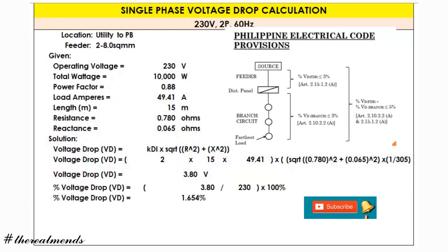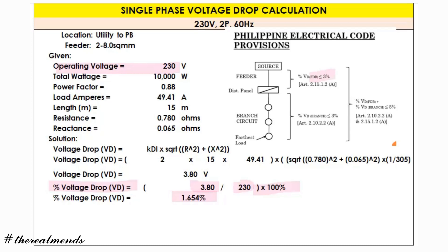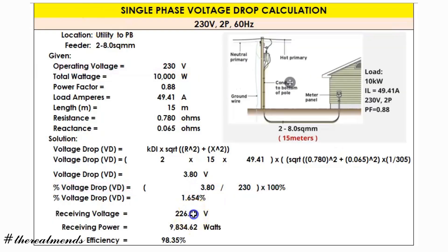To express the voltage drop in percent, divide 3.80 volts by the operating voltage of 230 volts, then multiply by 100. The answer is 1.654 percent. Based on PEC provisions, this should be less than or equal to 3 percent, or even 2 percent. Our result of 1.654 percent is less than 2 percent, so our conductor design is acceptable.